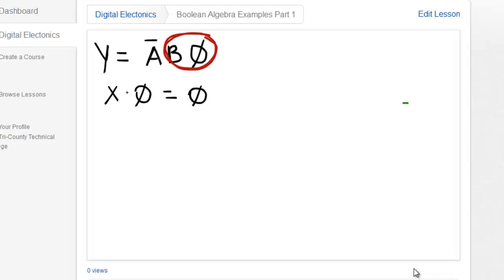that would become y is equal to not a and 0. And then we're going to apply that same rule. So not a and 0 is still going to be equal to 0.